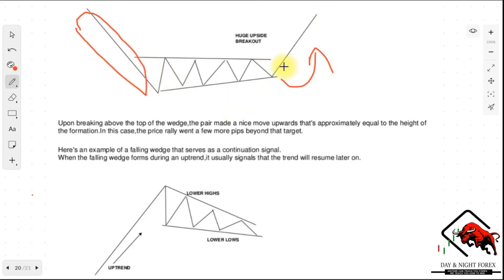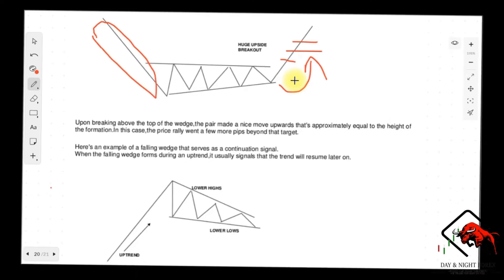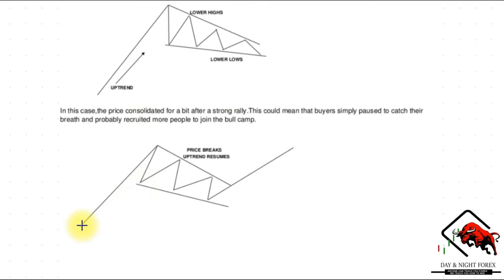Upon breaking above the top of the wedge, the pair made a nice move upward approximately equal to the height of the formation. In this case, the price rally went a few more pips beyond that target, which is why using a trailing stop is more powerful than a fixed take profit. Here is an example of a falling wedge that serves as a continuation signal — when it forms during an uptrend, it usually signals that the trend will resume, which is exactly what happened.